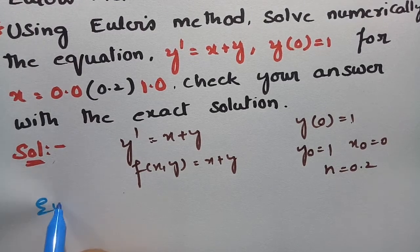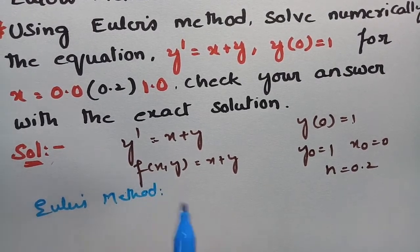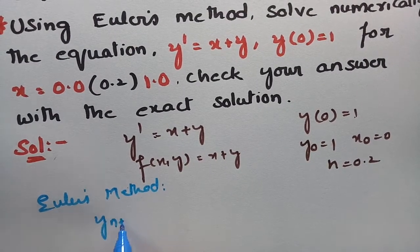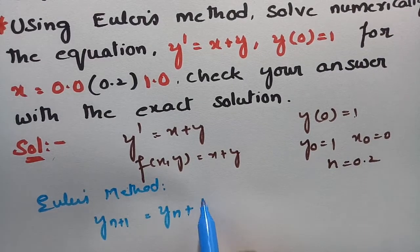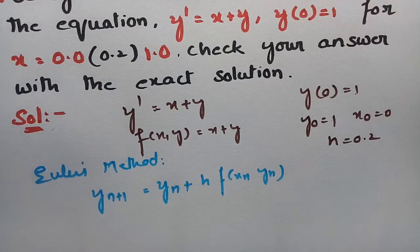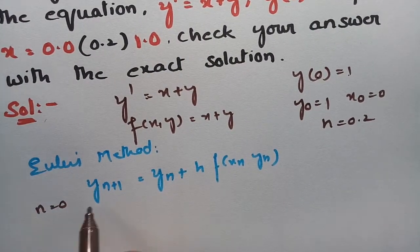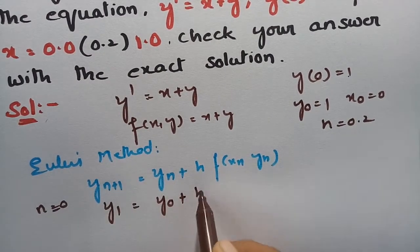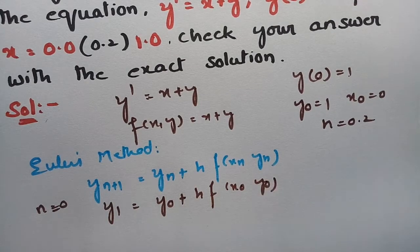According to Euler's method, the formula is y_{n+1} = y_n + h · f(x_n, y_n). Now keeping n = 0, this becomes y₁ = y₀ + h · f(x₀, y₀).